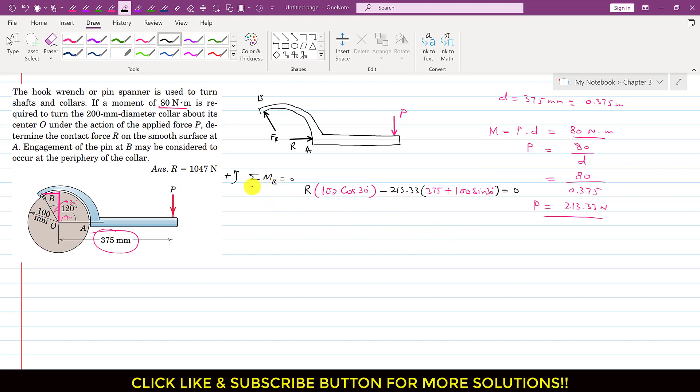So from this we can find that R which this spanner will apply on this collar at point A. So this is R and this equals 213. If we bring this to the other side of equation, so this will be like this. And if we divide both sides of the equation by this 100 cos of 30, so we will have this equation 100 cos of 30 degrees. And if we solve this, the R value comes out to be approximately 1047 newton.